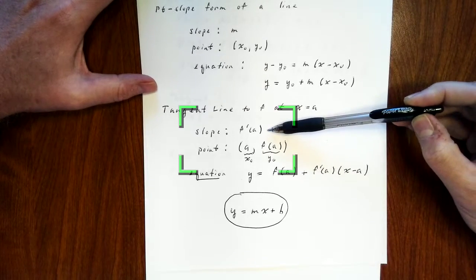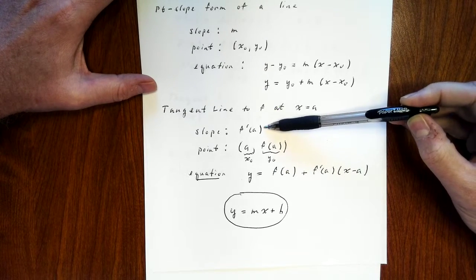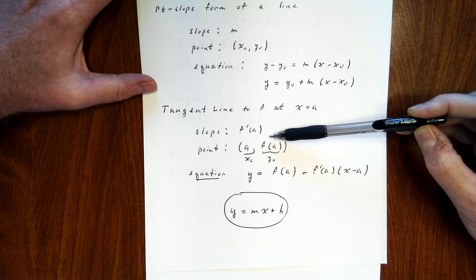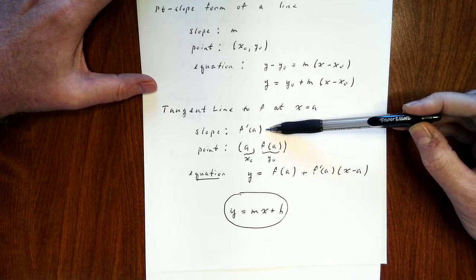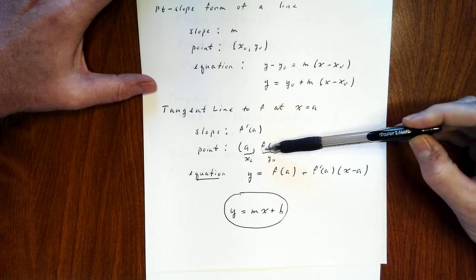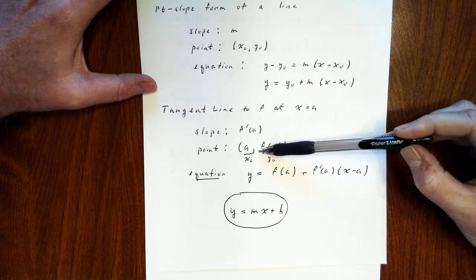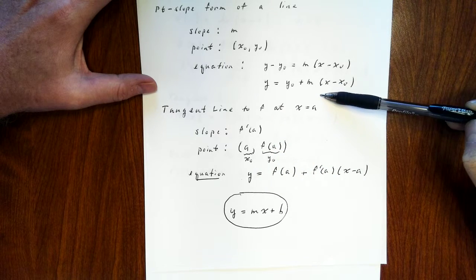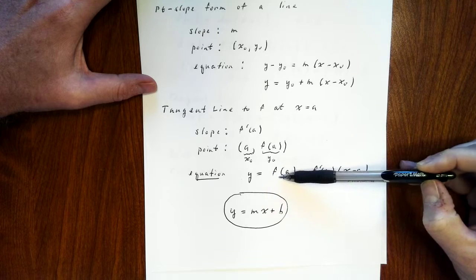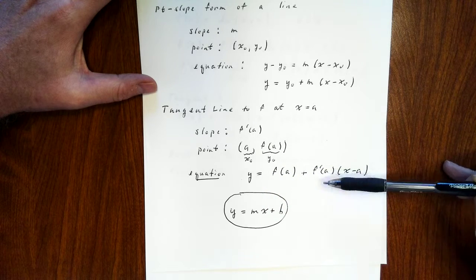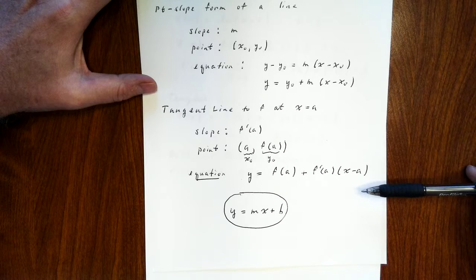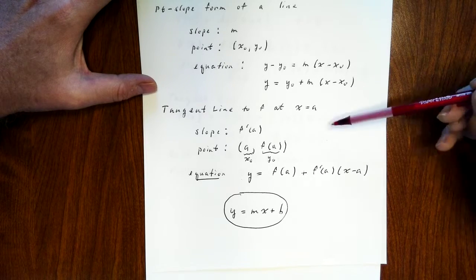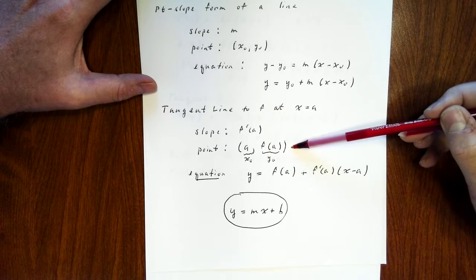If we want the equation of the tangent line to a curve at a particular point, we find the slope using the derivative. So if we want the tangent line at x equals a, the slope is f′(a), our x₀ value is a, and our known y value is f(a). Plugging everything in, we get y equals f(a) plus f′(a) times x minus a. This is the standard equation of the tangent line — we use the point-slope form because we usually have a slope given by the derivative at a point.